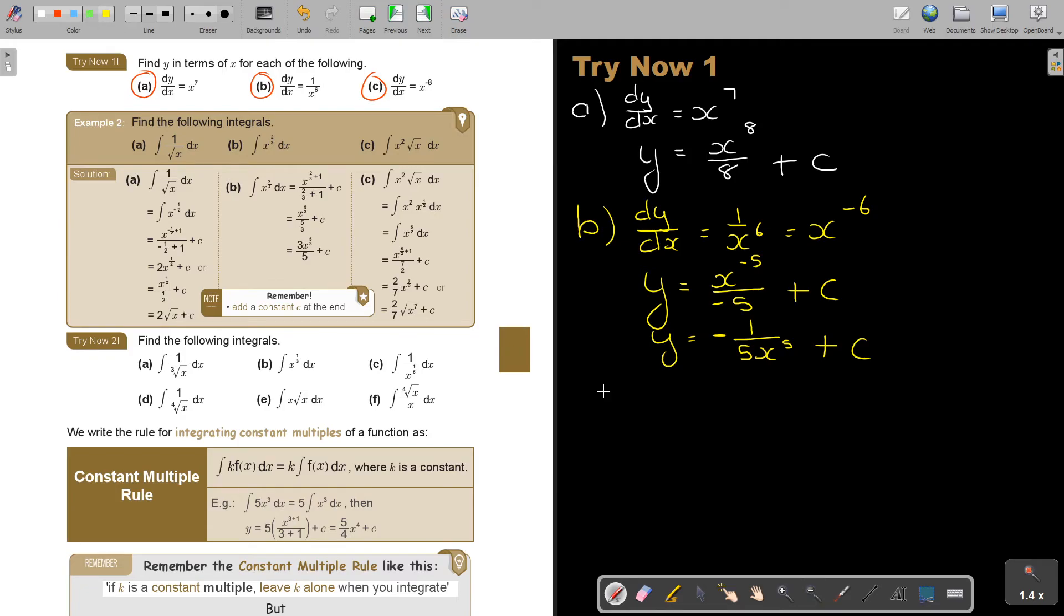And then the final one, number c. dy by dx is x to the power of negative 8. So y equals x, now this is negative 8 plus 1, so it will be negative 7, divide by negative 7. So always first add 1. And then don't forget the c. And you can simplify this again to negative 1 over 7x to the power of 7, plus c. It's the same as it happens there. Don't forget the c. And then that's how you do the very basic ones.